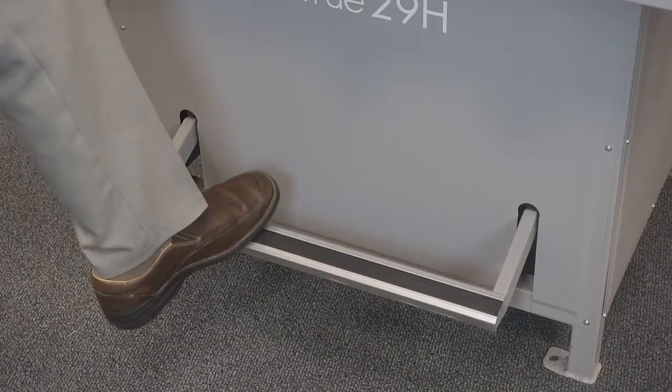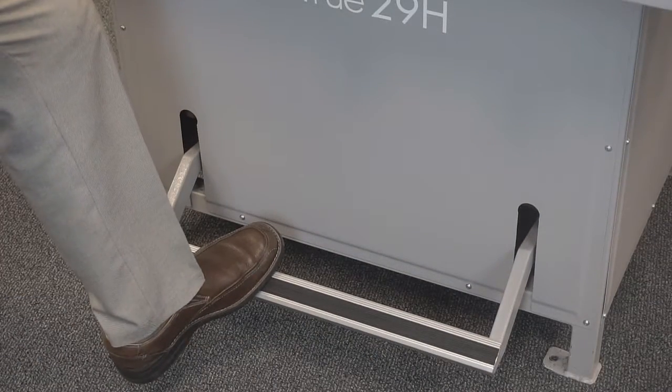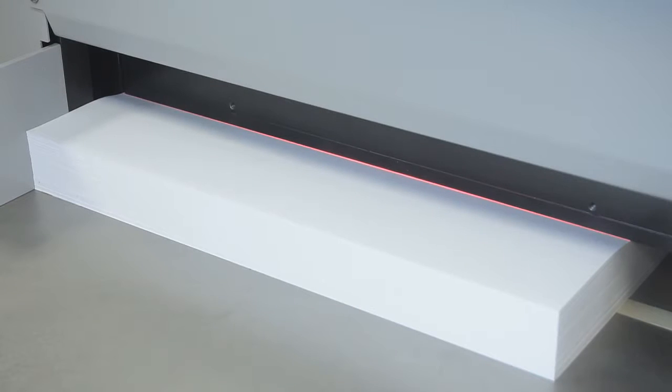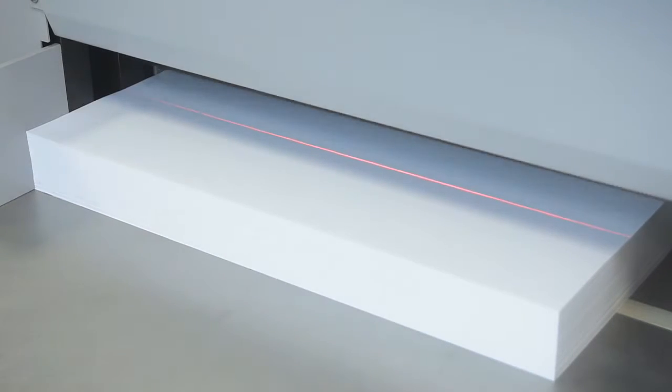Utilize the two push buttons on the 29A or the foot pedal on the 29H to lower the clamp into place. Notice how the bright LED laser line shows exactly where the blade will cut.